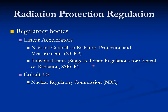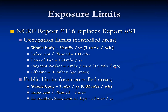Regarding radiation protection regulations, relevant regulatory bodies include those for linear accelerators, the National Council of Radiation Protection and Measurement (NCRP), individual sites, IAEA, and NRC. NCRP report 116 replaces report 91. Occupational limits and controlled area limits are defined, and one should be aware of these values in order to provide a safe environment.